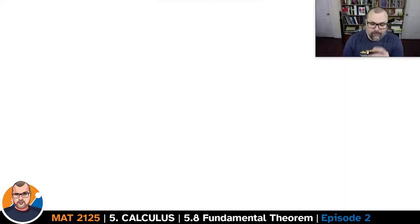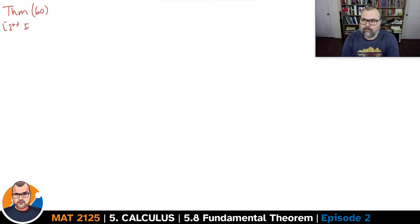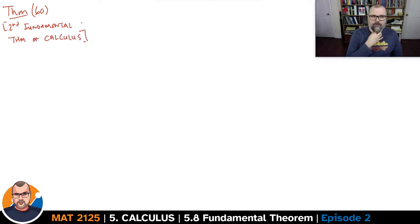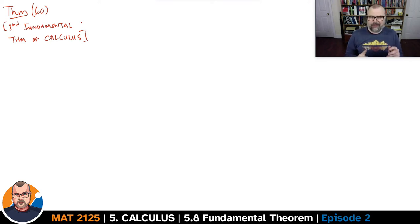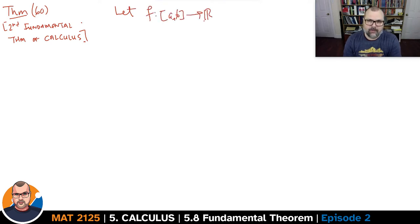Let's take a look now at the second version of the fundamental theorem. It looks an awful lot like the first version — it doesn't quite say the same thing, but we often sort of confound them as being part of the same theorem. Here we're looking at things in the other direction. We assume that we have a function from AB to R, and this function is again Riemann integrable.